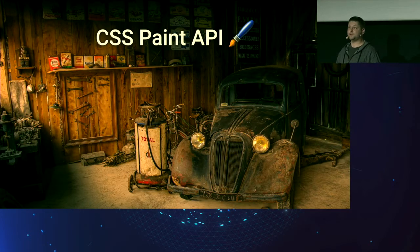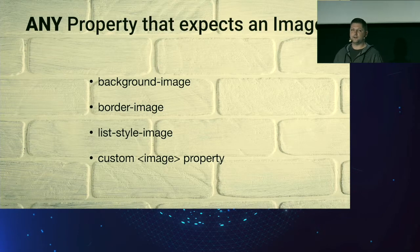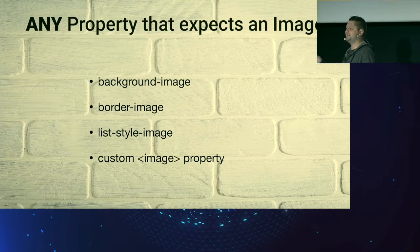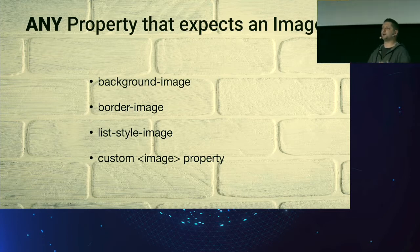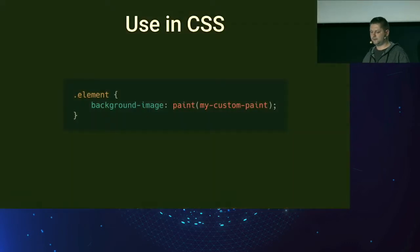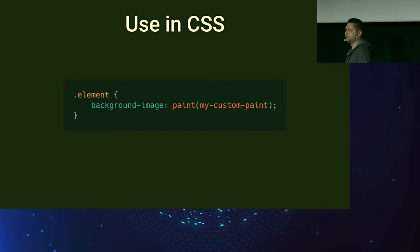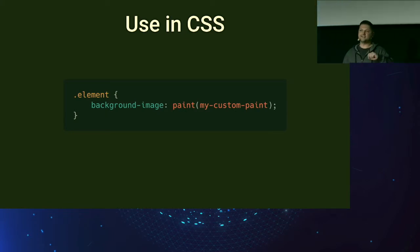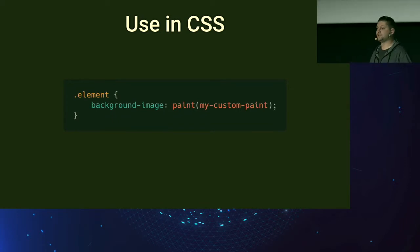CSS Paint API allows you to draw on a special version of canvas for any CSS property that accepts an image — like background-image, border-image, or even a custom property of type image. In CSS we have access to a special function called paint(), and inside this function we pass the name of our paint worklet that we create in JavaScript.